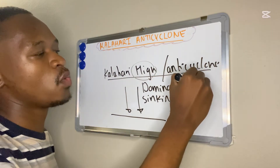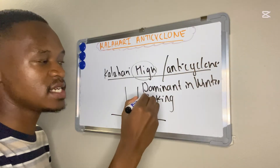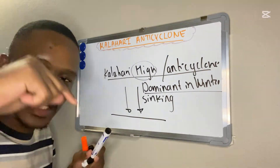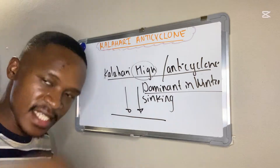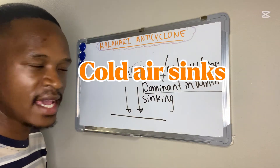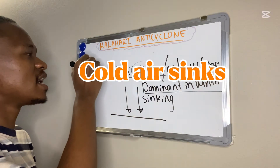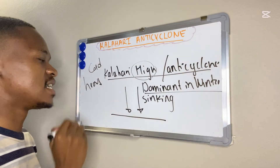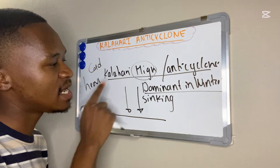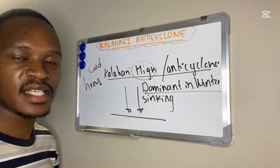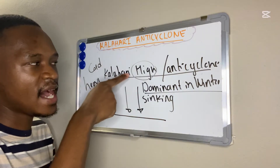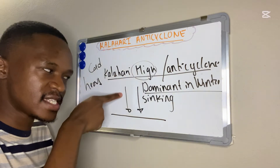The Kalahari High is dominant in winter. There is more sinking, more subsidence, or more descending air in winter because in winter we have low temperatures, which means there's cold air. Cold air is heavy and dense and therefore it sinks. So our Kalahari High is dominant in winter because we have cold air which sinks.